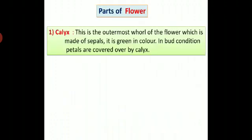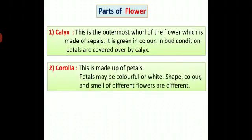Calyx: this is the outermost whorl of the flower which is made up of sepals. It is green in color. In bud condition, petals are covered over by calyx. Corolla: this is made up of petals. Petals may be colorful or white. Shape, color and smell of different flowers are different.